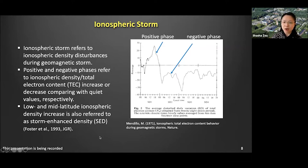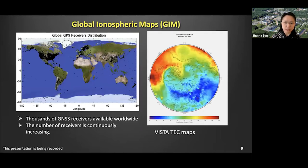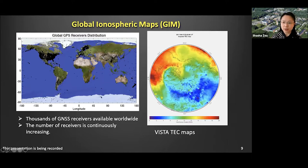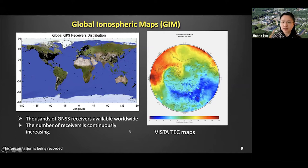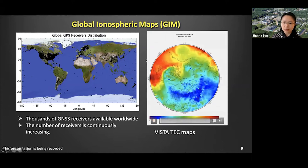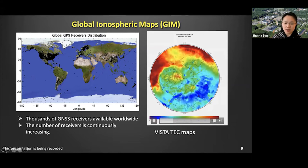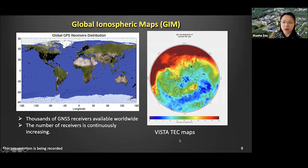Recently, benefiting from global-scale total electron content (TEC) observations from worldwide GNSS receivers — the GNSS refers to the Global Navigation Satellite Systems — with thousands of ground-based receivers available, we now have the opportunity of monitoring ionosphere plasma content on a global scale. This availability renewed our interest in studying the ionosphere response during geomagnetic storms. The map shown here is from our recently developed model called VISTA, which I will discuss later.